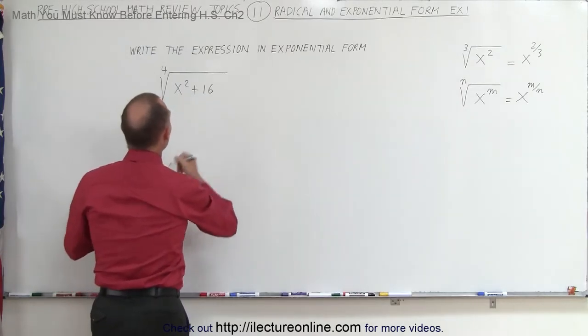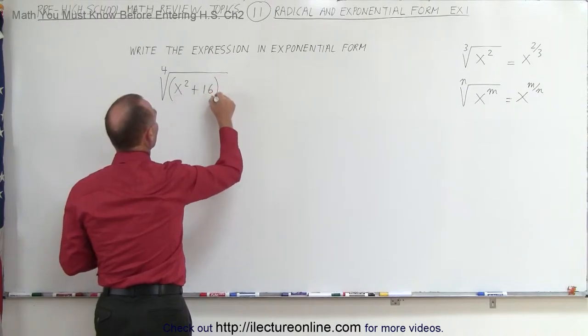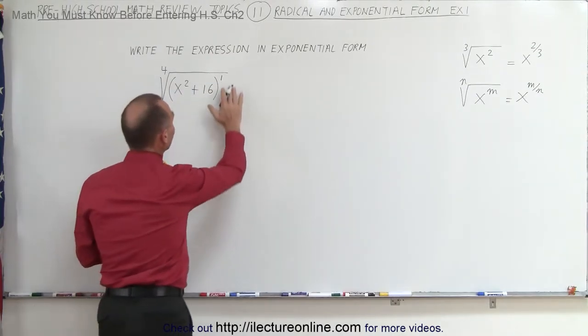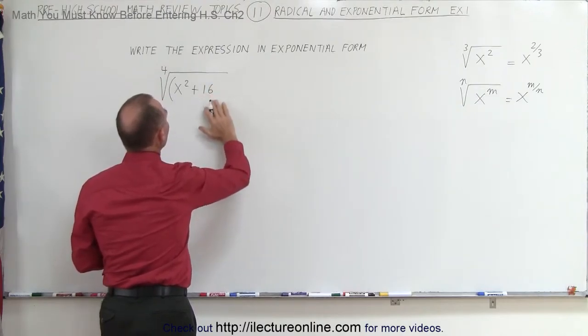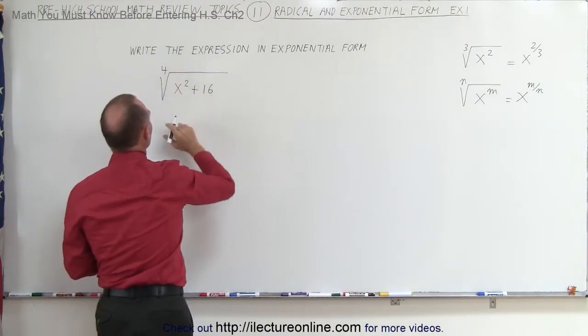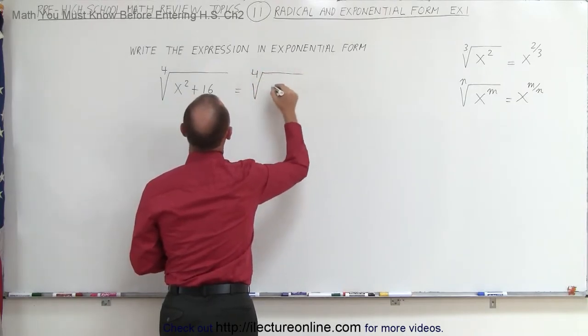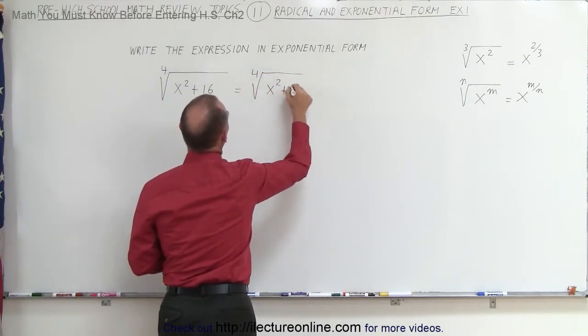Now when you look at this, you can imagine that this here inside the radical is written to the first power. Even though it wasn't there, you can imagine it to be like that. So let's write it separately like this: the fourth root of the quantity x squared plus 16.